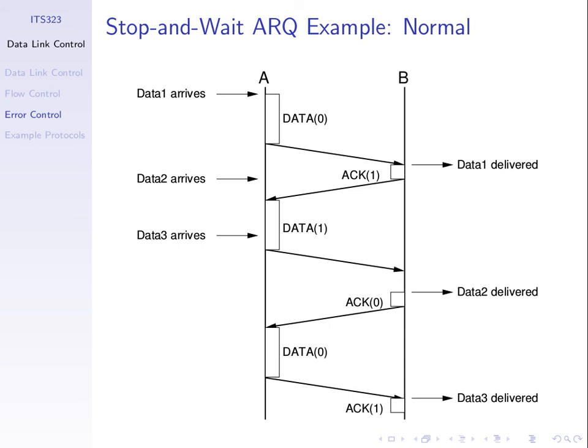Stop-and-wait ARQ looks the same as stop-and-wait flow control. Send data, data arrives at B, B when it's ready sends back an ACK. A sends data, arrives at B, maybe B processes it for some time, sends back an ACK. Data, ACK, data, ACK — this is the normal case with no errors. Sequence numbers are attached to the frames — we'll explain why they're needed.